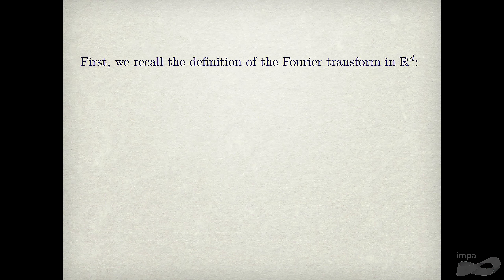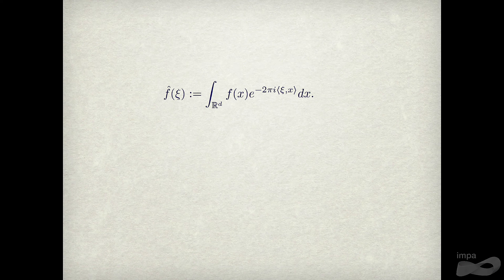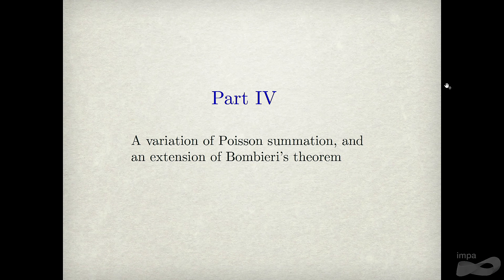Just to clarify notation: I'm using the standard definition of the Fourier transform with 2π in the exponent, the same definition most people use, though sometimes people place the 2π elsewhere. Part four: a variation of Poisson summation.